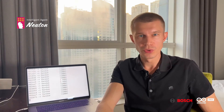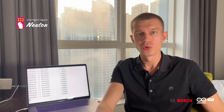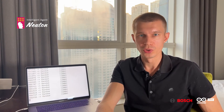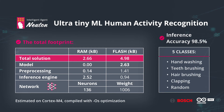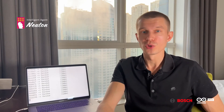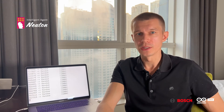Now let's look at the model characteristics measured on the Cortex M4 microcontroller. The most important parameter here is the model footprint. In terms of flash, the whole solution occupies 4.98 KB. The model itself without the pre-processing and the inference engine is just over 2.5 KB. And in terms of RAM, the overall memory consumption is 2.66 KB. As you can see, the model is very small and can be embedded into any tiny microcontroller.